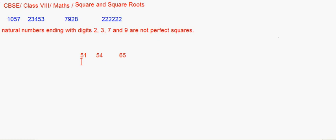For 65, the unit digit is 5, and 5 × 5 = 25, so the unit digit of 65² is 5. Similarly, you can mentally find unit digits of squares for numbers like 213, 3824, 977, or 4002.